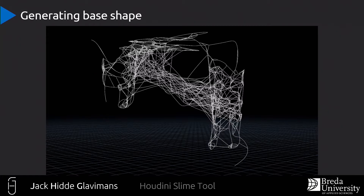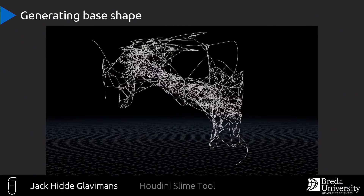Then I smooth it and do it again with a little less distance to get even more connections. A really important part is that I resample everything with a set distance and then use Connect Adjacent Pieces to connect it back together again to get one mesh — because if you don't do this, the slime will basically fall apart completely in the simulation.